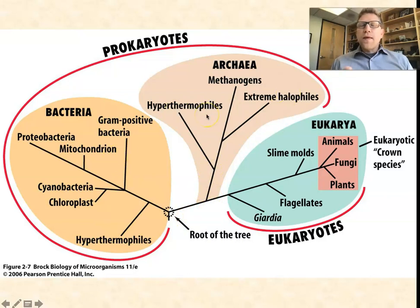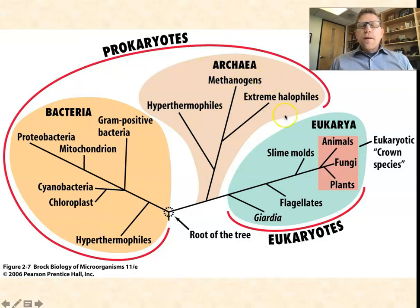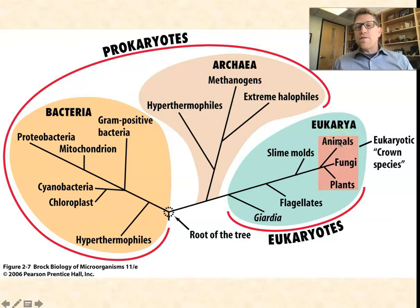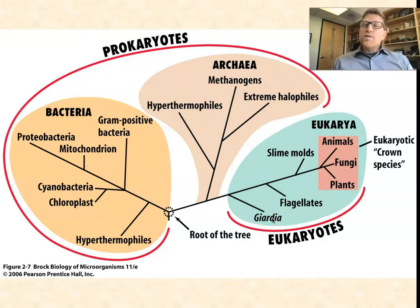Both the bacteria and the archaea have a prokaryotic cell structure — make sure you know what that word means. Now all the big stuff on planet earth: the people, the plants, the bunnies, all fall into the domain Eukarya, and they all have a eukaryotic cell structure. There are also some single-celled eukaryotes like Giardia and yeasts, and some of those can actually cause infections in humans.